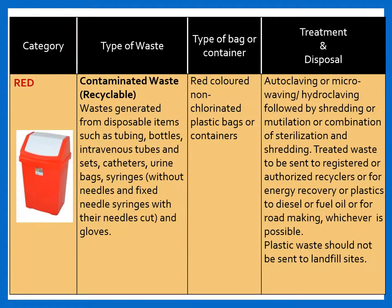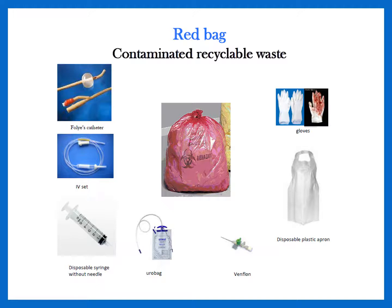Coming to the red category: contaminated waste which can be recycled needs to be discarded in red color bags. Waste generated from disposable items such as tubings, bottles, IV tubes, catheters, urine bags, syringes without needles, and gloves — including infected catheters, IV sets, disposable syringes without needles, urobags, venflons, disposable plastic aprons, and gloves — need to be discarded in red colored non-chlorinated plastic bags.